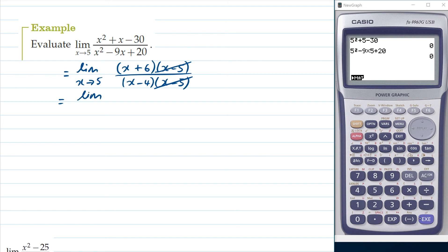So what we're actually working out here is the limit as x tends to 5 of (x + 6) over (x - 4).